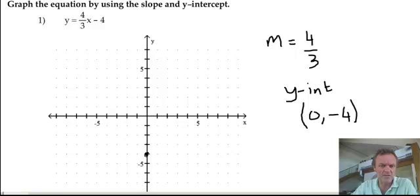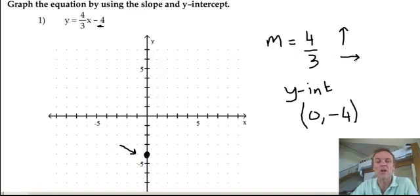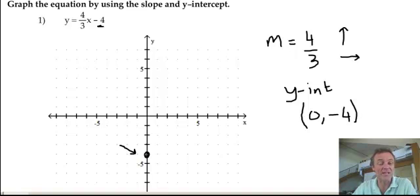I'm going to put a point right there at negative 4. Now, if the slope is 4 thirds, then what it's doing is going up 4 up the y-axis and along the x-axis 3 — rise over run. So up 4 and on 3. From that point, the y-intercept, I'm going to go up 1, 2, 3, 4, then go on 1, 2, 3. That's the other point that's going to lie on the line.